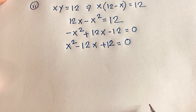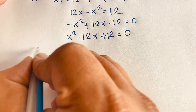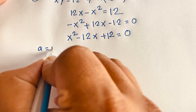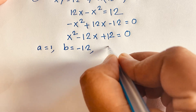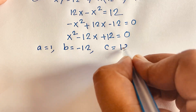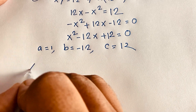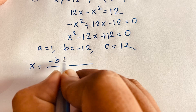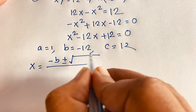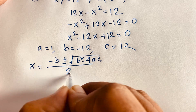Now we find the value of x in this quadratic equation. We identify: a is equal to 1, b is equal to negative 12, and c is equal to positive 12. Applying the quadratic formula: x equals negative b plus or minus square root of b squared minus 4ac, all over 2a.